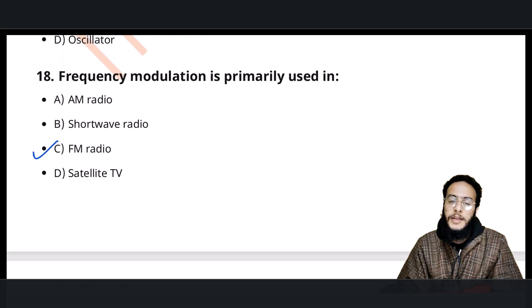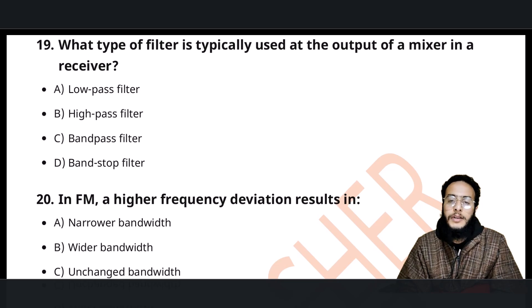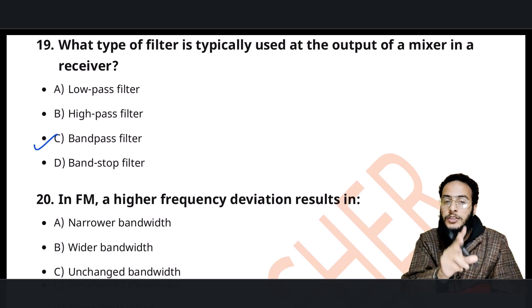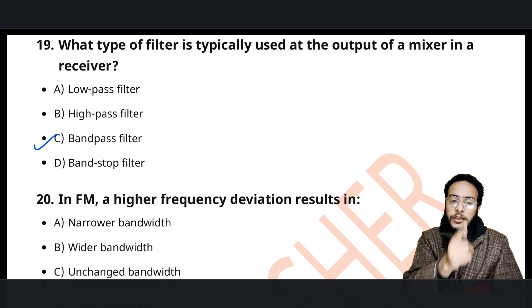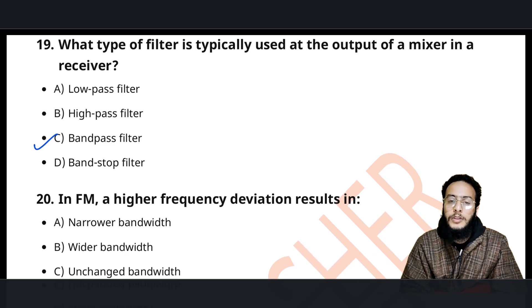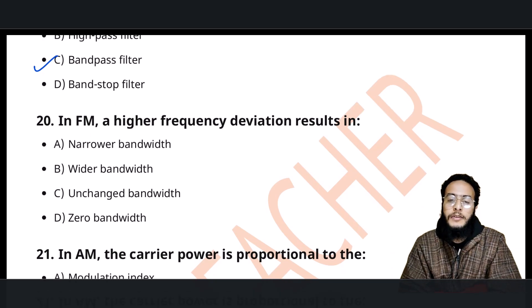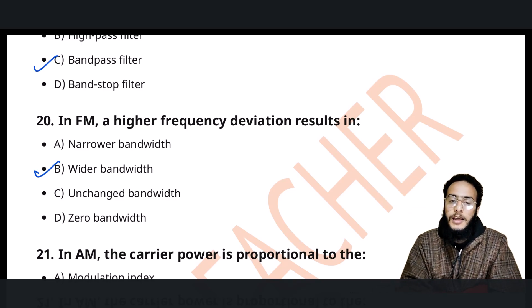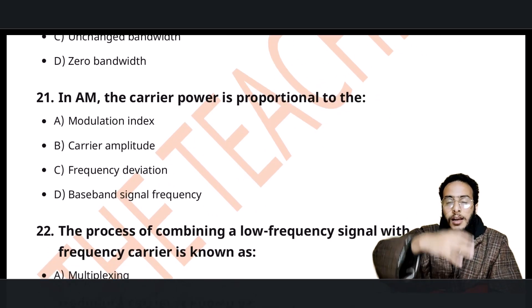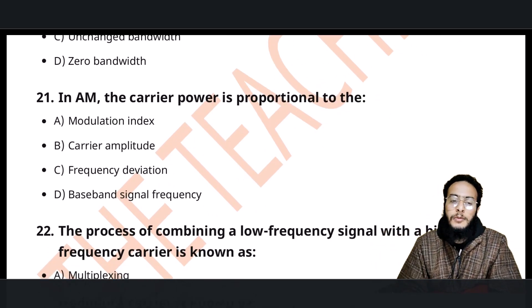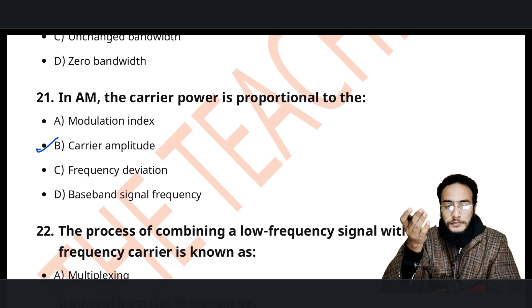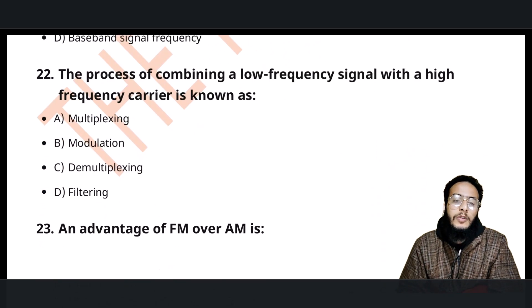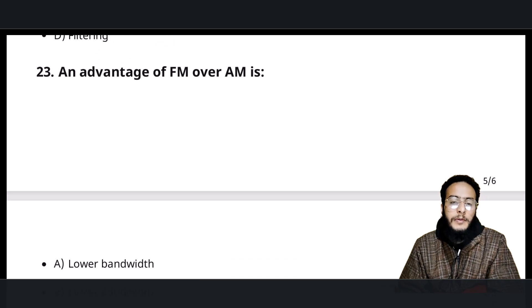FM radio uses frequency modulation. The output of the mixer has the unwanted frequency removed by the band pass filter — this is band pass filtering, and carrier suppression also occurs. In FM, higher frequency deviation results in higher bandwidth, since bandwidth and frequency deviation are directly proportional. Carrier power is proportional to carrier amplitude — the higher the carrier amplitude, the higher the carrier power.